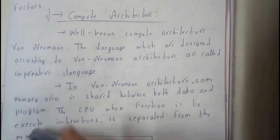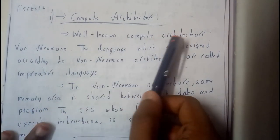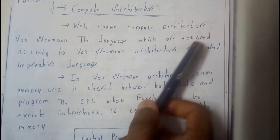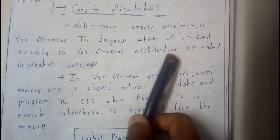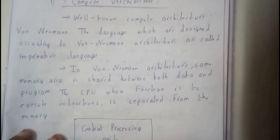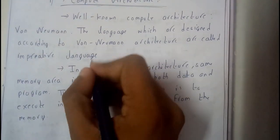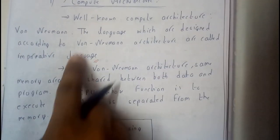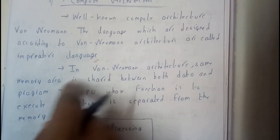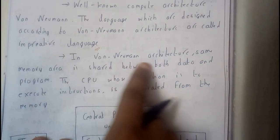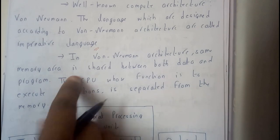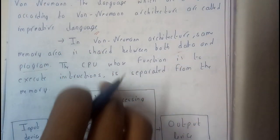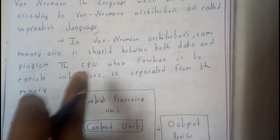The well-known concept of computer architecture is Von Neumann architecture. Languages designed according to Von Neumann architecture are called imperative languages. Most of the languages we use are imperative languages, all belonging to this popular architecture model. In Von Neumann architecture, the same memory area is shared between the data and the program, so there is a common area for both program and data.